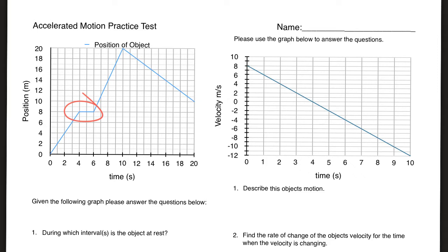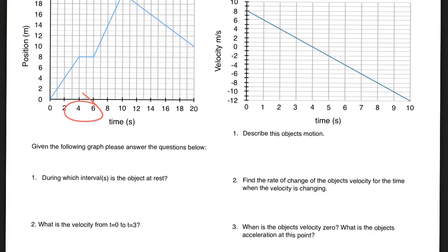Moving on: what is the velocity from t equals zero to t equals three? You're specifically looking for the slope. Although it says zero to three, the slope is the same everywhere in that region — it goes from zero to eight meters in four seconds, so two meters per second. Put the positive sign out there to indicate the answer is positive, because if it's negative and you don't include the negative sign, you'll lose a point.